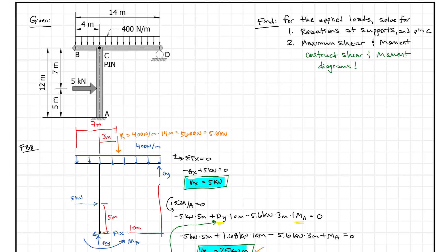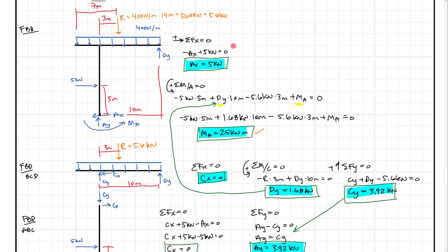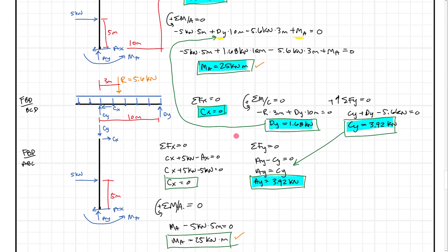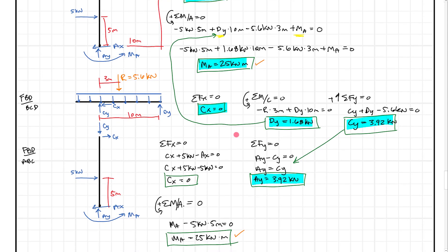In a previous video, we went ahead and solved for the reactions on this frame. We found the moment, the axial force, and the shear at A, we found the forces at pin C, and we also found the vertical force at point D. We had to draw free body diagrams, apply equations of equilibrium, and solve for all these different forces. I've summarized that to start the process of drawing our shear and moment diagram.